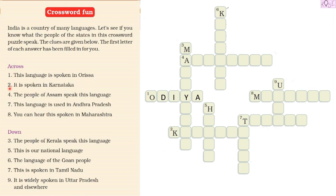Next, across number two — it is a language spoken in Karnataka, and it starts with K. The language spoken in Karnataka is Kannada. We already have K, so we write A, N, N, A, D, A — Kannada. We have now filled in Odia and Kannada.